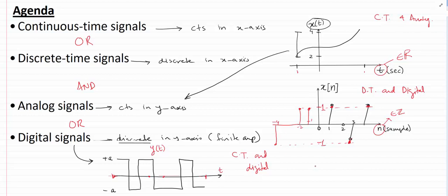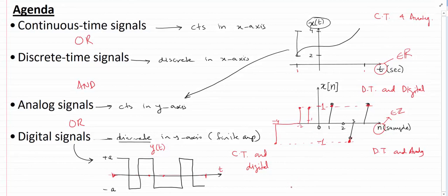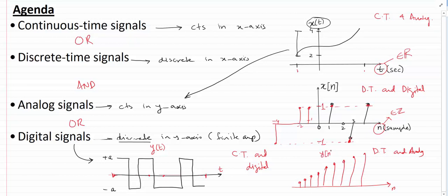The last combination is discrete time and analog. One possible example of such a signal is y of n, where the signal is defined only at discrete times but can take any possible value of amplitude — you cannot count the possible values of amplitude this signal can take. So the amplitude is continuous in the y-axis, making it analog, while being defined only at discrete levels of time, making it a discrete time signal.